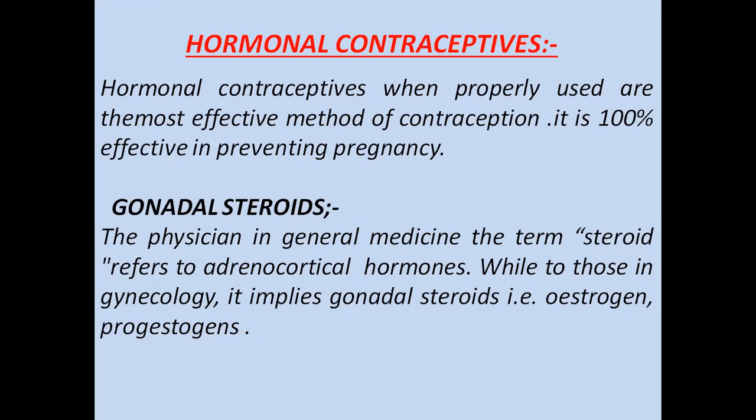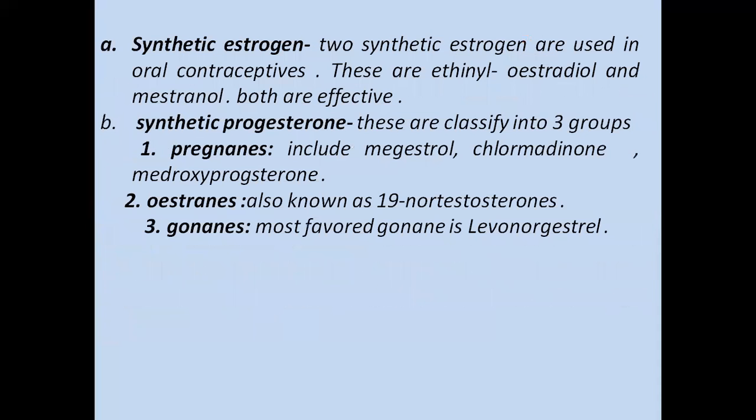The hormones used are either estrogen or progesterone, which are gonadal steroids. In general medicine, the term steroids refers to adrenocortical hormones, while in gynecology it implies gonadal steroids — estrogen and progesterone. Now, synthetic estrogen or synthetic progesterone are made outside the human body. Two synthetic steroids used in oral contraceptives are ethinyl estradiol and mestranol.